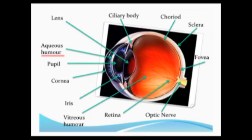Then we have the aqueous humour, which is a transparent fluid located in the anterior chamber — just between the cornea and the lens. It's produced by the ciliary body, and this fluid provides nutrients and oxygen to the cornea.